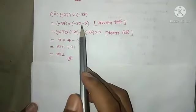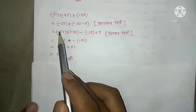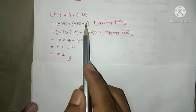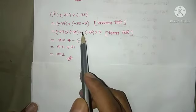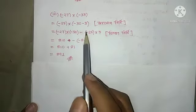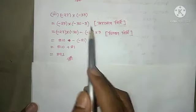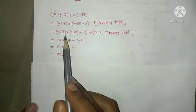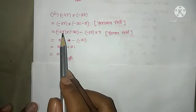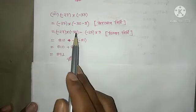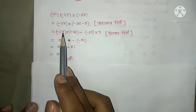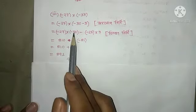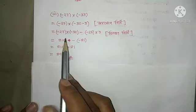For minus 27 into minus 30: minus times minus gives plus, so 27 into 30 is 810. For minus 27 into minus 3: minus times minus gives plus, 27 and 3 is 81. The answer is 810 plus 81 equals 891.